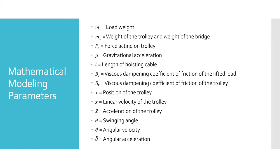These parameters can be found in the derived transfer function of the system. Here, ML is the load weight, MT is the weight of the trolley, FT is the force acting on the trolley, G is the gravitational constant, L is the length of the cable, and BL is the viscous dampening coefficient of friction of the lifted load.